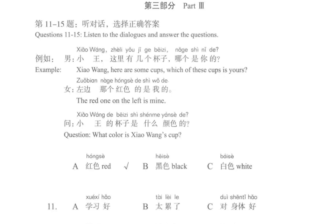左边那个红色的是我的。The red one on the left is mine. 小王的杯子是什么颜色的？What color is Xiao Wang's cup?